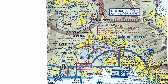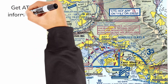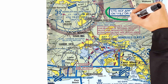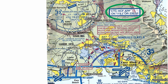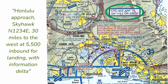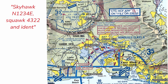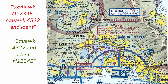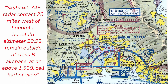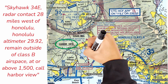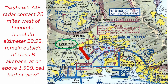The first step, just outside the 30 nautical mile ring, is to obtain the current ATIS when headed towards Class B airspace. Once you have the ATIS information, contact whichever approach control is listed on the VFR sectional or terminal area chart. My call was something like this: 'Honolulu Approach, Skyhawk November 1234 Echo, 30 miles to the west at 5,500, inbound for landing with Information Delta.' Approach will then assign a transponder code and have you ident. Once they identify your aircraft, they confirm your location, the current altimeter setting, provide instructions about remaining outside Class B airspace, assign an altitude, and provide some sort of route or checkpoint.